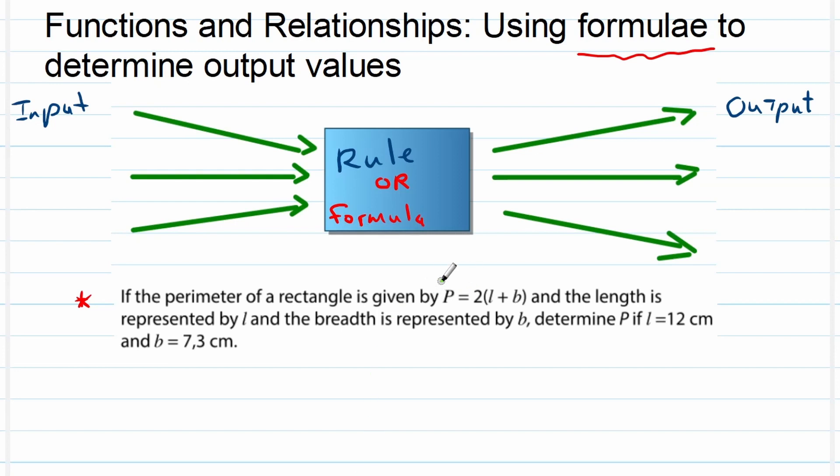First of all they gave us a rule, they gave us the formula. So that's one thing to notice. Second of all they gave us the two input values, an L value and a B value, and they want us to calculate the output value.